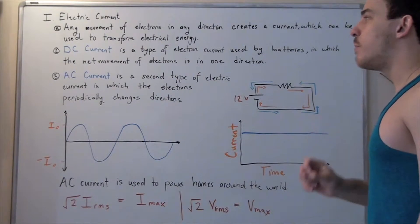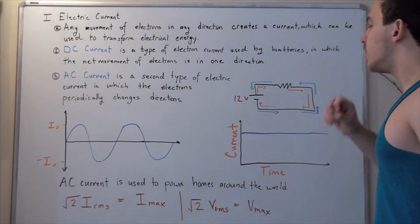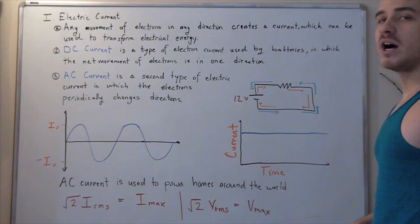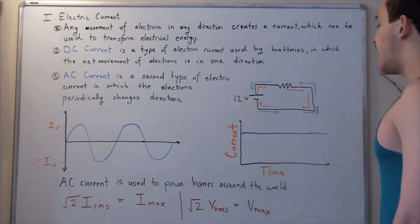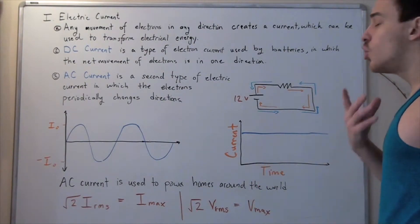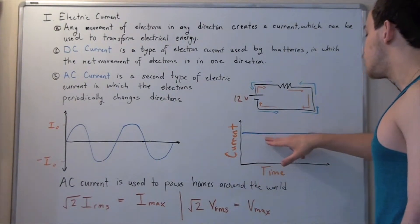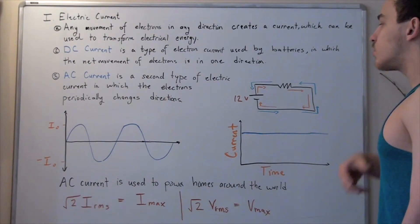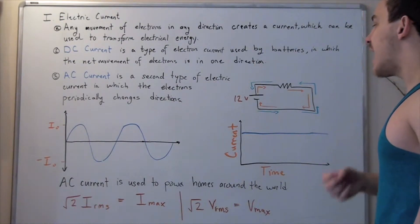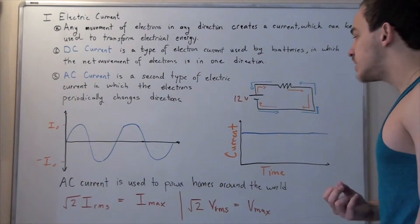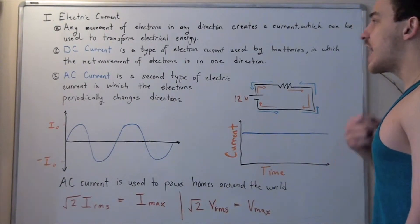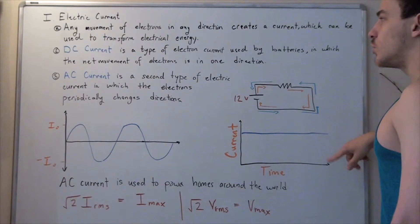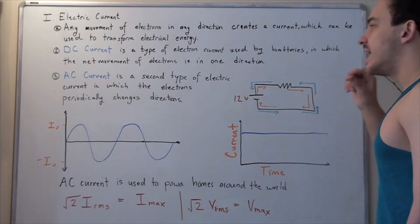What do we mean by a steady DC current? Well, if we graph our current on the y-axis and time on the x-axis, we will get a steady straight line. That simply means that our current flow does not change, and our direction of current does not change — and therefore it's a steady direct current, or steady DC current.